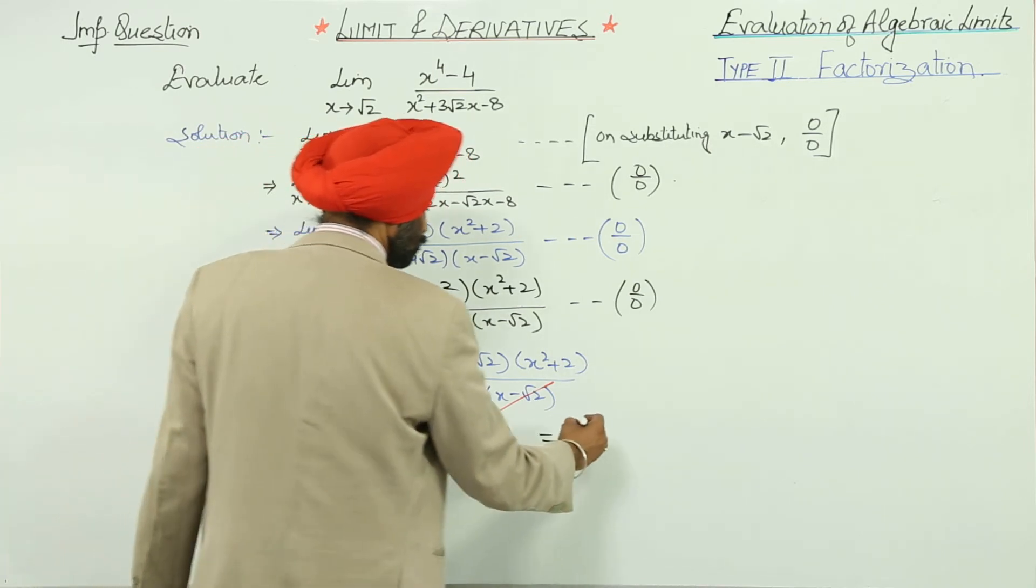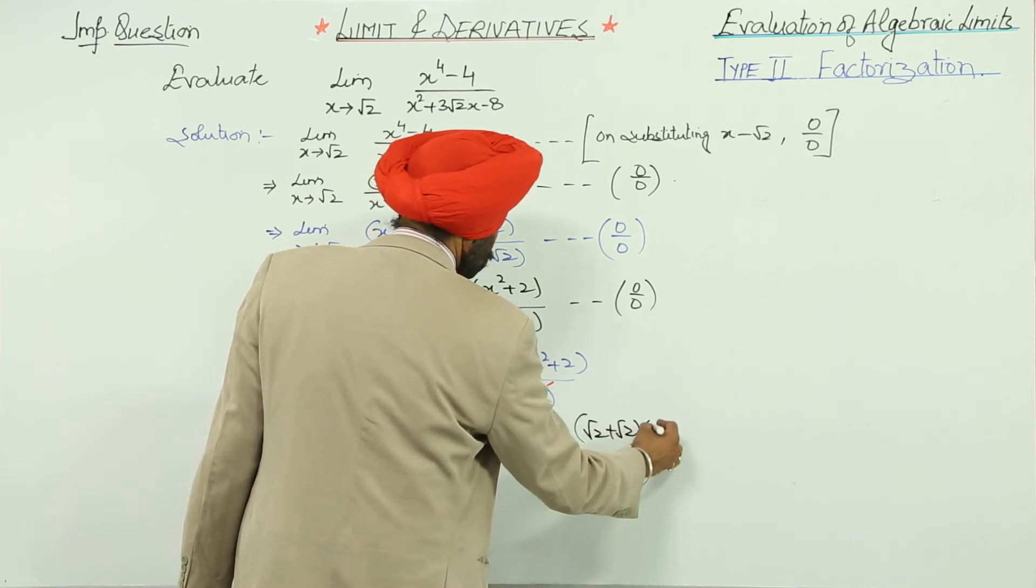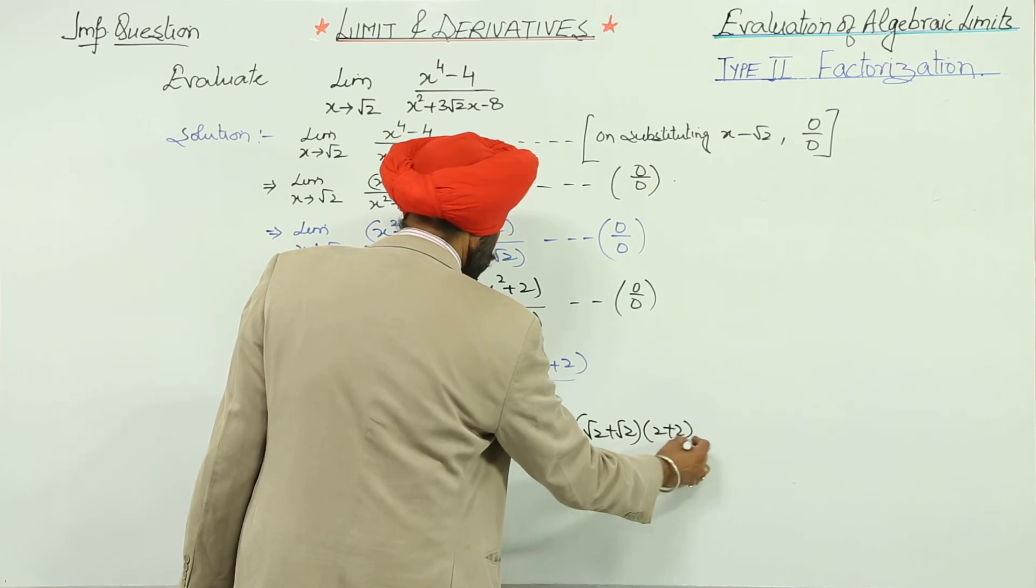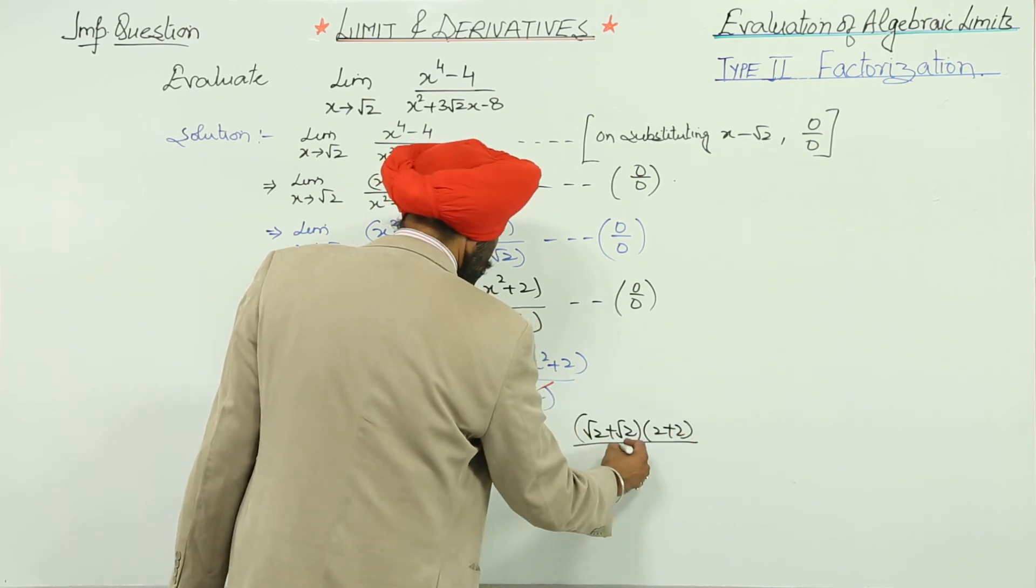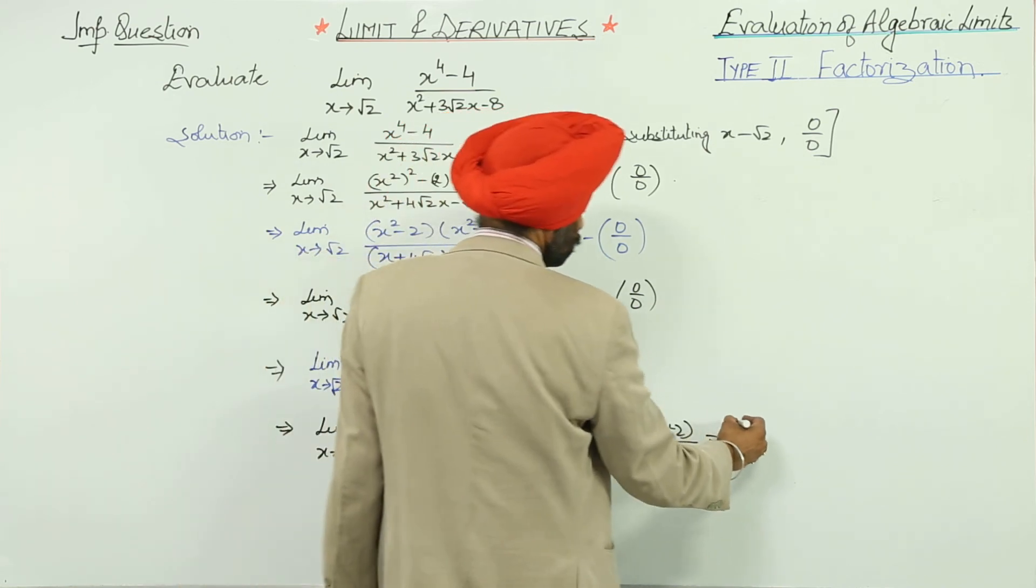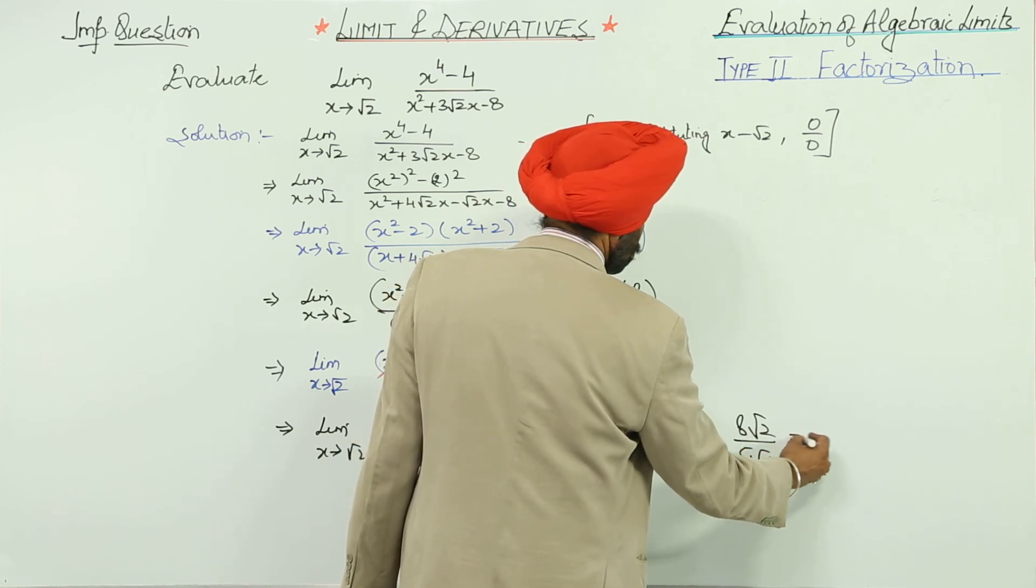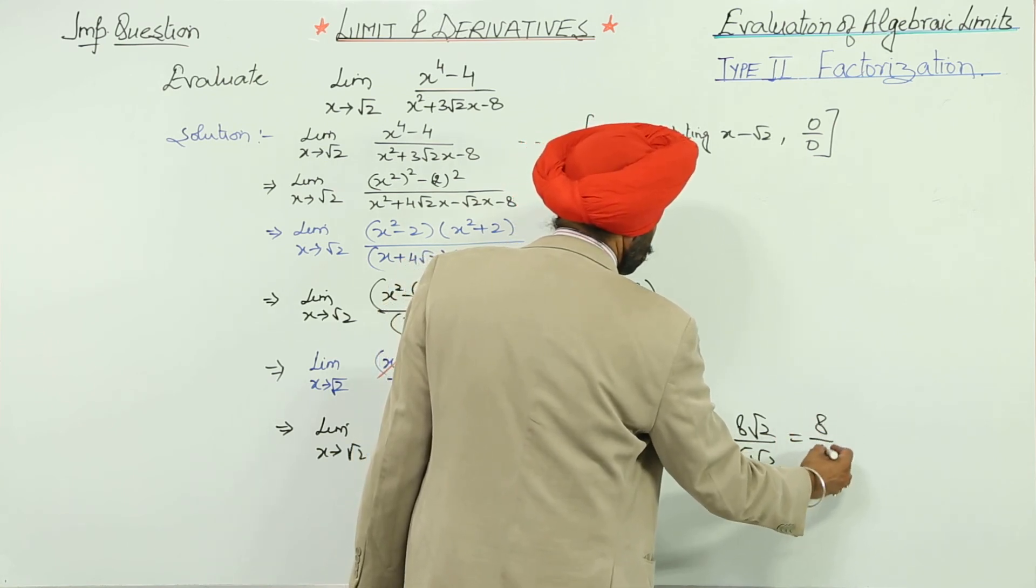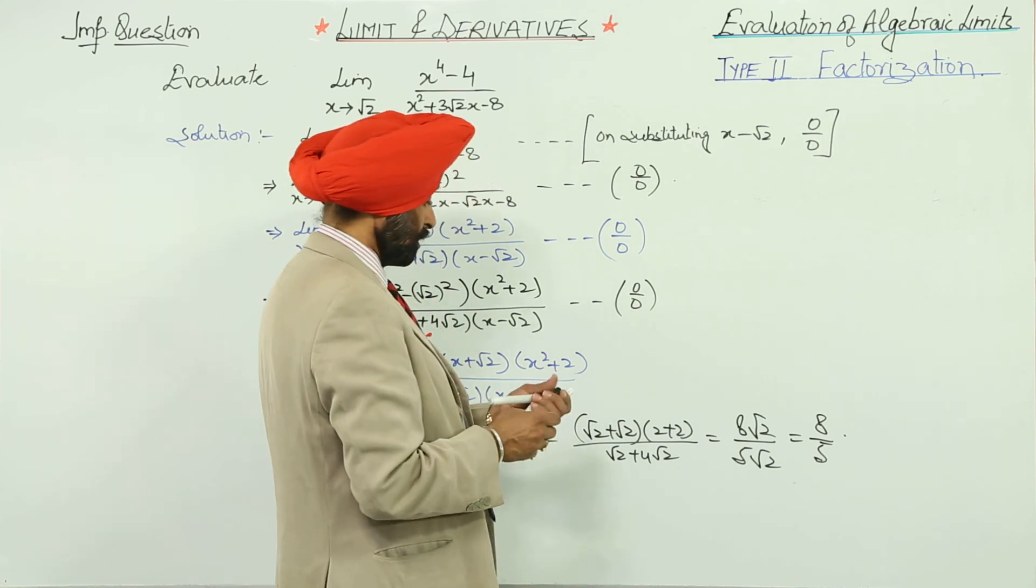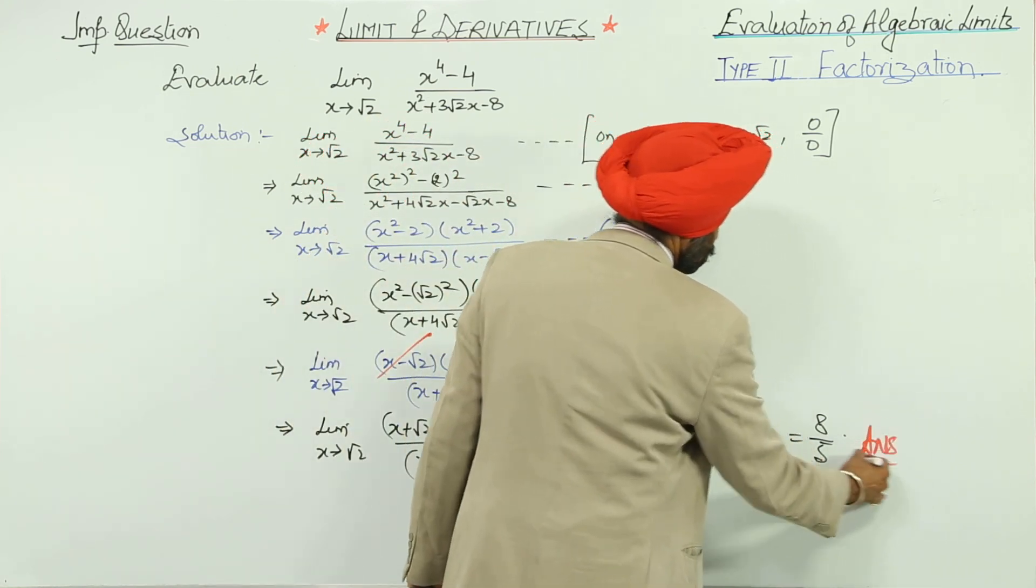This becomes root 2 plus root 2, 2 plus 2 upon root 2 plus 4 root 2. 8 root 2 is equal to 8 upon 5. This is the answer.